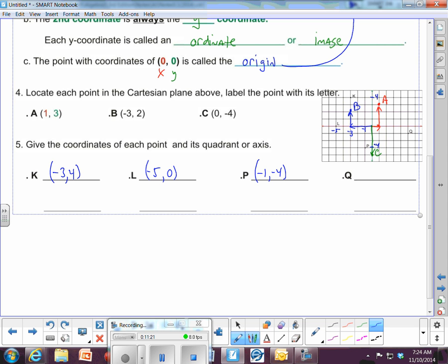And finally, point Q. And so we are one, two, three, four, five. For an X coordinate. And negative one for a Y. Five, negative one.